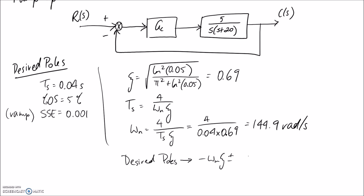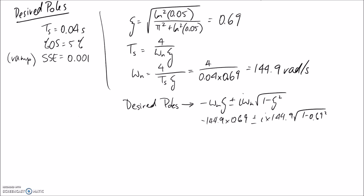The general form of the equation for a second-order system gives us our desired poles. Substituting in omega n as 144.9 and zeta as 0.69, you end up with desired poles at negative 100 plus or minus about 105i. Our steady state error criteria won't come into play until toward the end when we design the lag part of our controller.